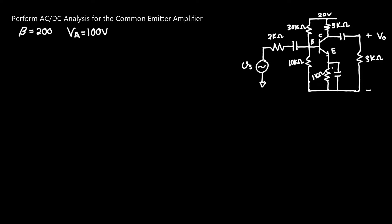The reason we put capacitors is that for different frequency ranges you will have poles, but we don't need to worry about that here. Under DC conditions, capacitors are open, which means everything to the left of this coupling capacitor is not connected to the main part of the circuit and does not need to be considered.